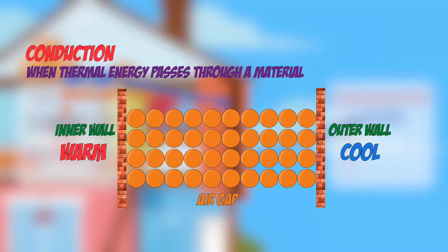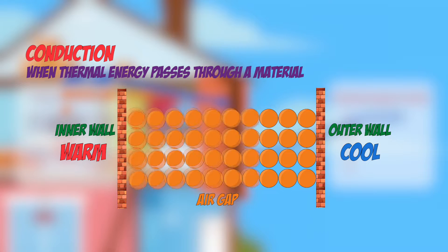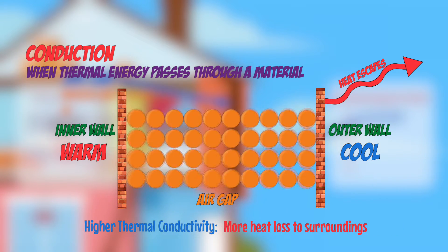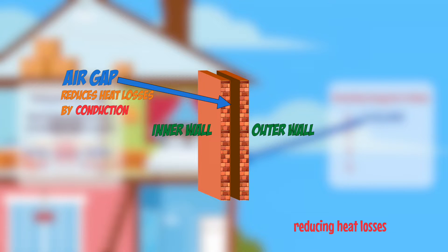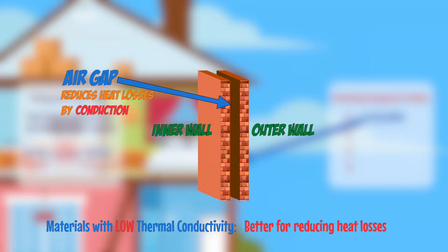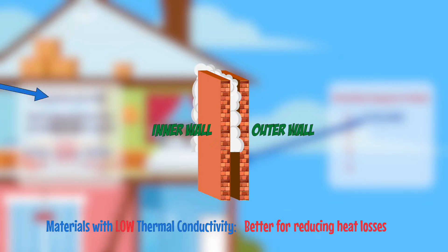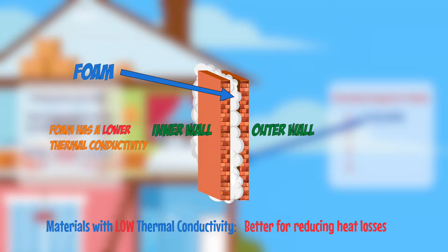Conduction is a process where thermal energy is transferred through a material. When a material is heated, the particles within it gain kinetic energy and vibrate more, causing them to collide with neighbouring particles and transfer the energy throughout the whole object. The higher the thermal conductivity of the material, the faster this process occurs. Air has a very low thermal conductivity, so the air gap in the cavity wall is good at preventing energy losses by conduction. You can also fill the air gap with foam, which has an even lower thermal conductivity than air, reducing heat loss by conduction even more.